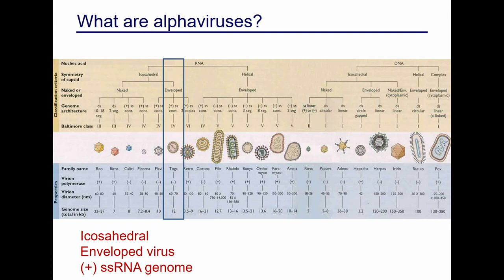What are alphaviruses? Many of you might not be familiar with them. What we have here is a list of different animal viruses. As with all viruses, you can categorize things based on shape, components, and genomic material. What you need to remember is that alphaviruses are icosahedral viruses — they're enveloped, and they contain a positive-stranded, single-stranded RNA genome.